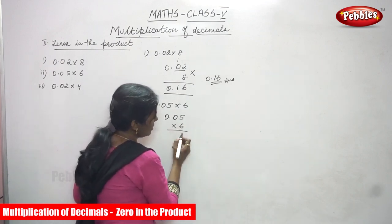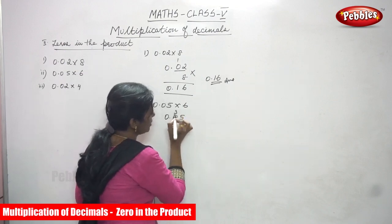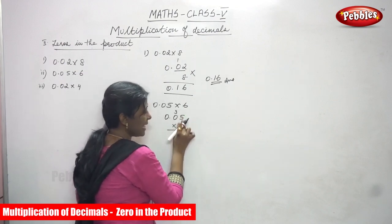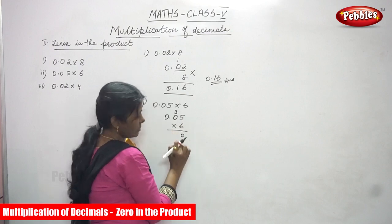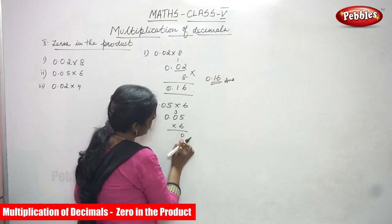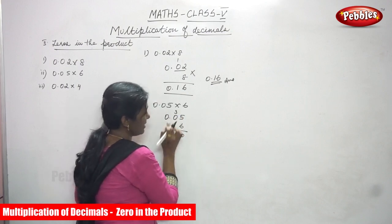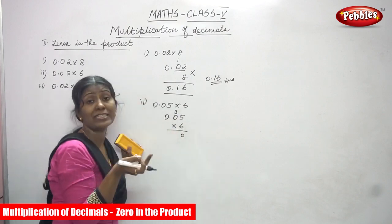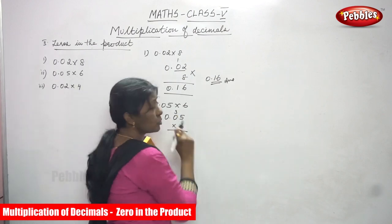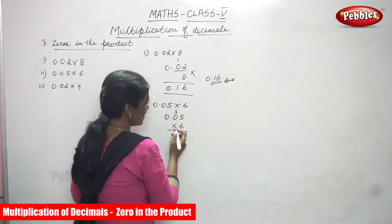So 5, 6 are 30. 0. Carry over goes to the 10th place value. This is a 100th place. This is a 10th place. So 5, 6 are 30. 0. Carry over goes to the 10th place value. It goes. You must write it on the top. So 6 into 0, 0. So 0 plus 3, 3.